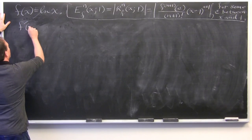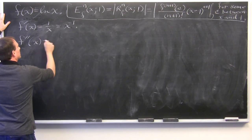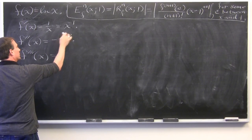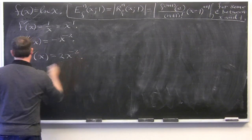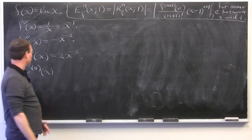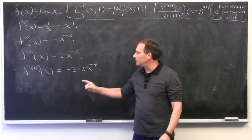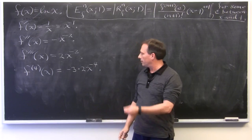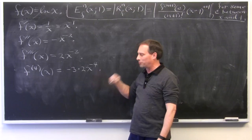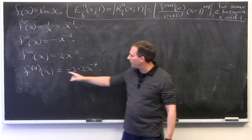f'(x) = 1/x = x to the minus 1. f''(x) = minus x to the minus 2. You just use the power rule after this. f'''(x) = negative 1 times negative 2, so 2x to the minus 3. The fourth derivative is minus 3 times 2 times x to the minus 4. At this point, hopefully you can see the pattern. If we take another derivative, we're going to multiply by negative 4, so the sign goes back to a plus — minus times minus is a plus. And you'll see 4 times 3 times 2, then 5 times 4 times 3 times 2. You're getting a factorial. The plus-minus sign is alternating, and the power of x matches the derivative you're on.